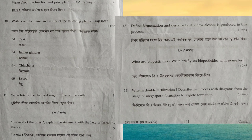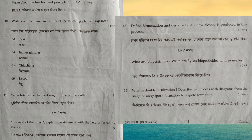Next question: write briefly about the chemical origin of life on earth — you have to write the Oparin and Haldane concept of chemical evolution. Next question: 'survival of the fittest' — explain the statement with Darwin's theory. Darwin proposed the theory of natural selection; nature always selects those species which overcome the struggle. Among the interacting species, those that compete and win the race are selected by nature for maximum resource utilization, and they are regarded as the survival of the fittest.